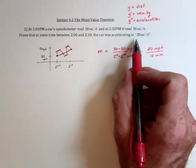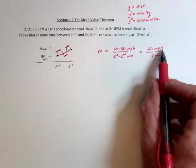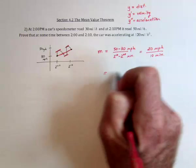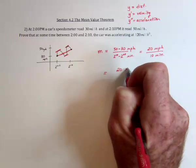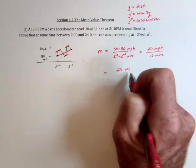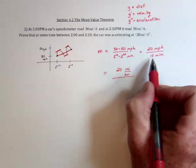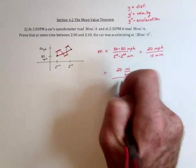Now, how do we get 120 out of that? Well, this is in hours, and this needs to be changed to hours. So we've got 20 miles per hour, which is being divided by 10 minutes is 1 sixth of an hour.